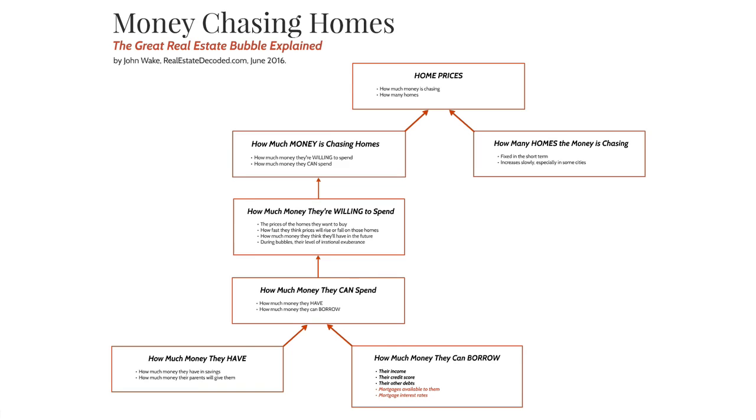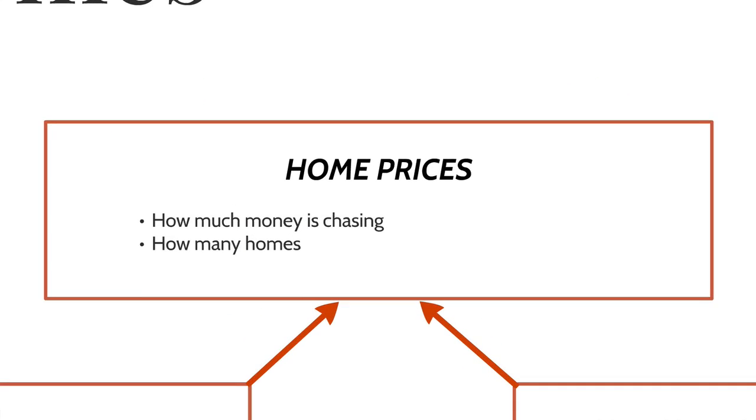I spent a couple of months trying to figure it out for myself and found an easy way to explain the basic economics behind the great real estate bubble. Economists like to say about inflation that prices are determined by how much money is chasing how many goods. The 'how much money' part measures demand and the 'how many goods' part measures supply. It turns out this simple framework also works great for explaining the boom and bust in home prices in the great real estate bubble.